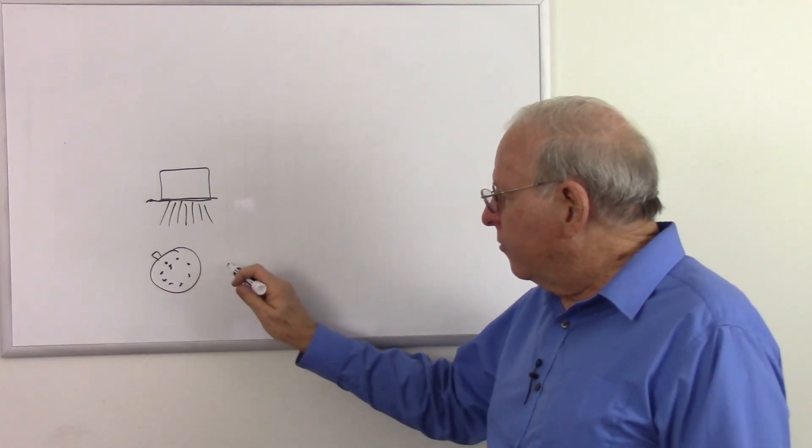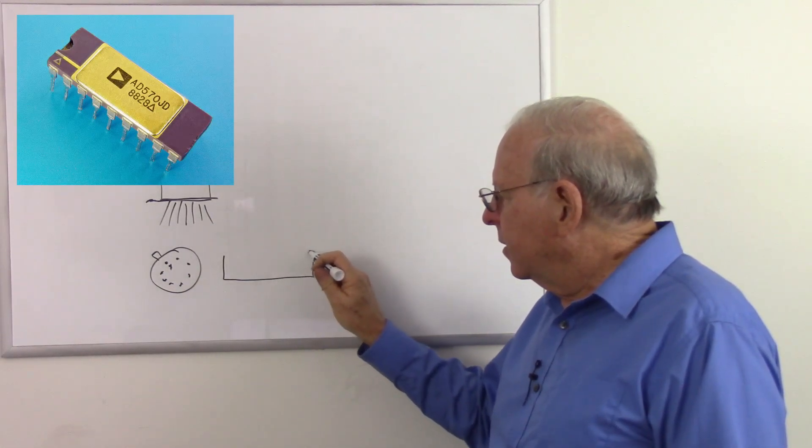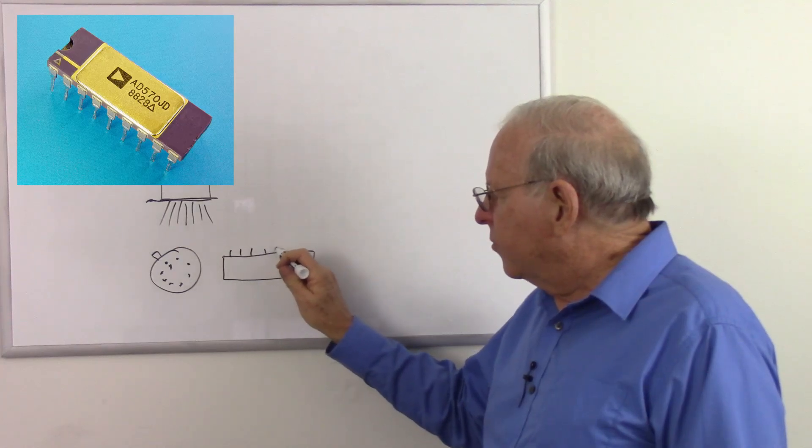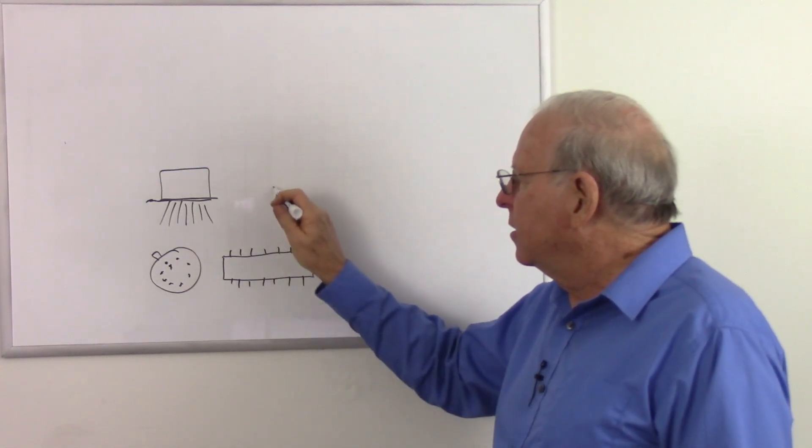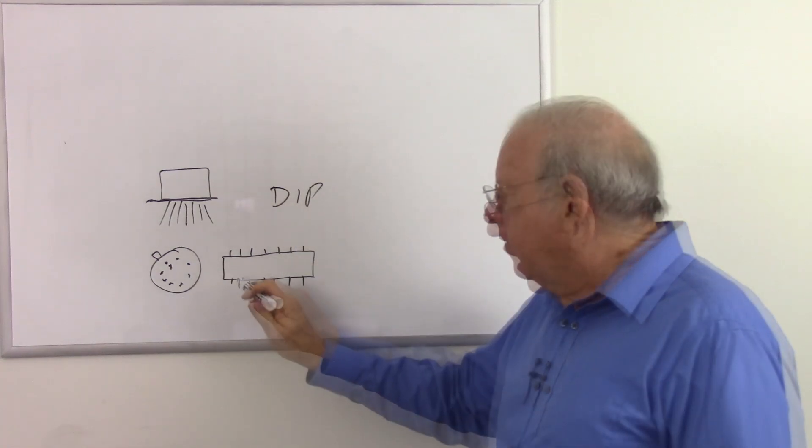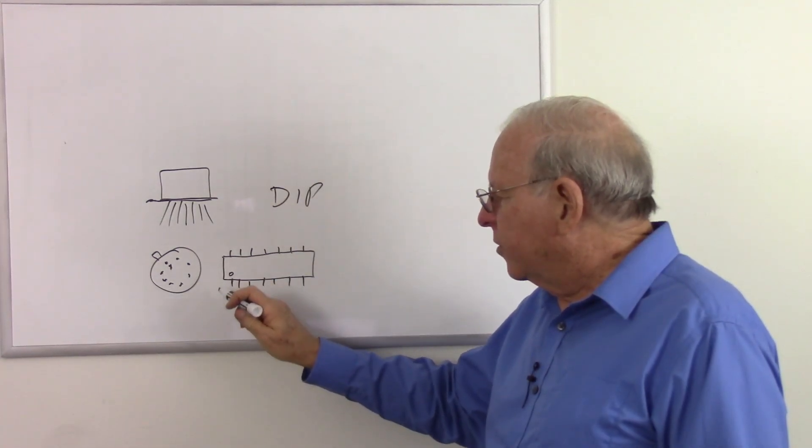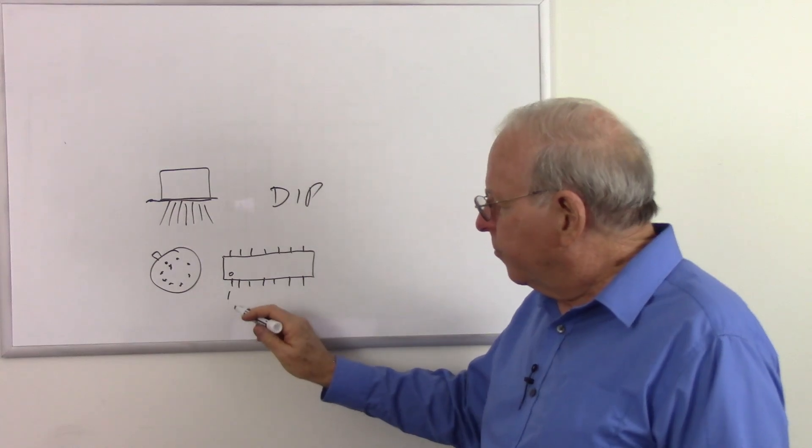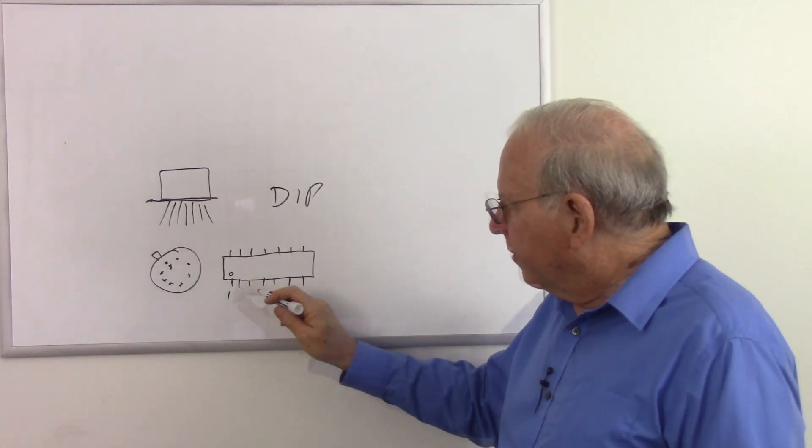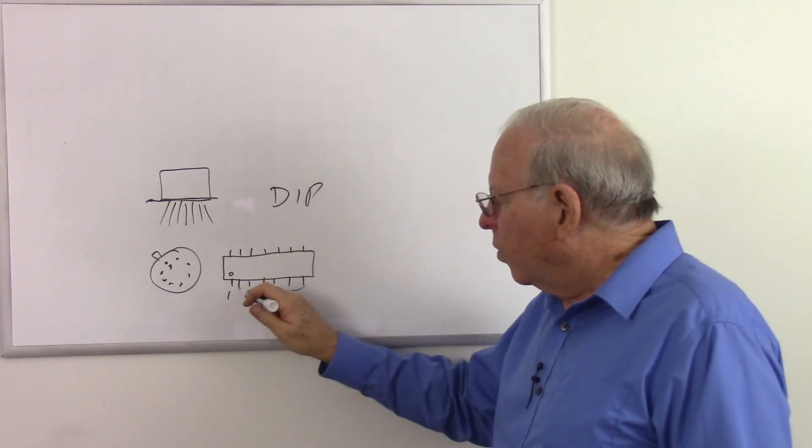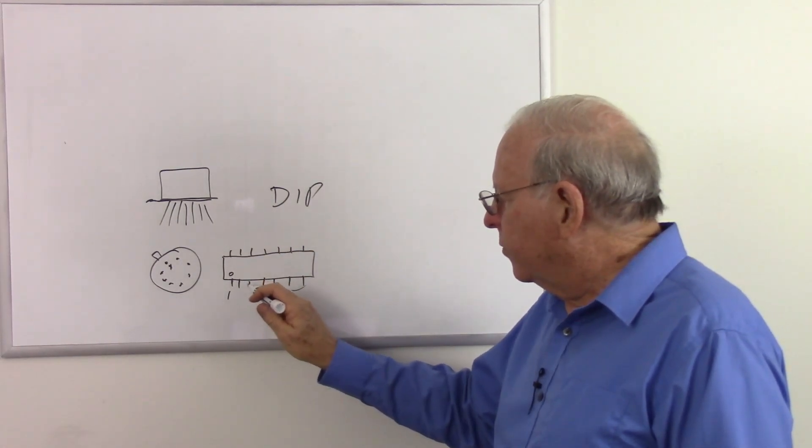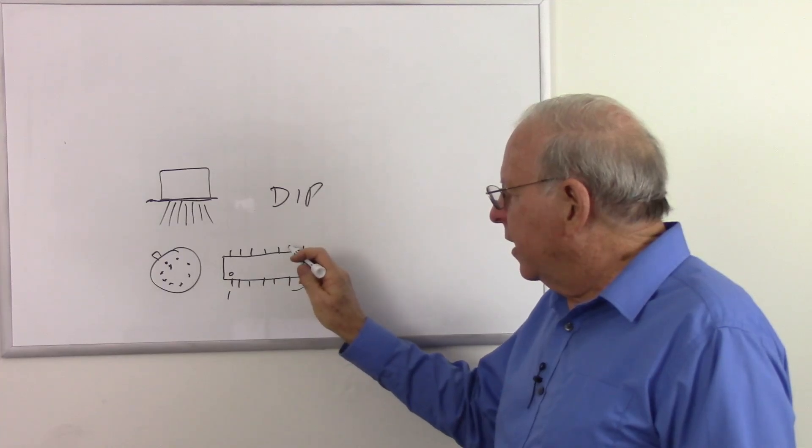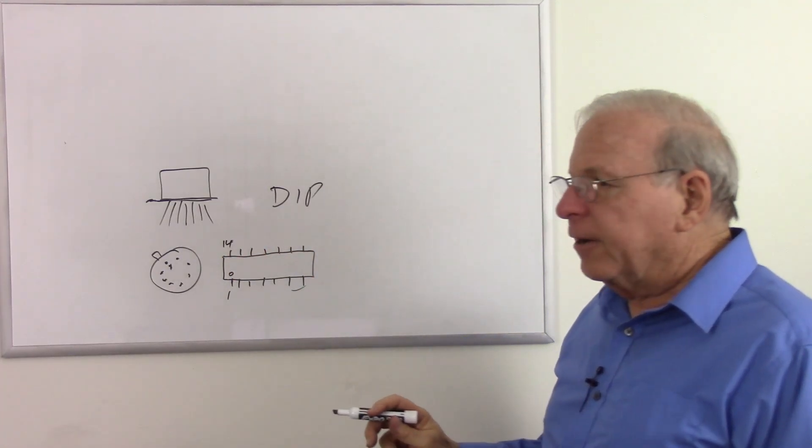But the more popular package nowadays would be a DIP package, which has a number of pins on each side. DIP stands for dual inline package. And there's going to be a mark of some sort, often a little dot that represents pin one. And you count around counterclockwise from one down to round up to the highest numbered pins. So one, two, three, four, six, seven, eight, nine, 10, 11, 12, 13, 14 pin DIP there.